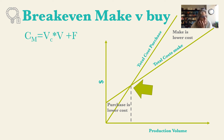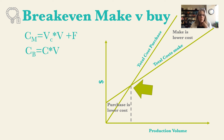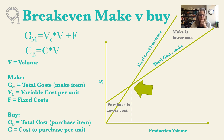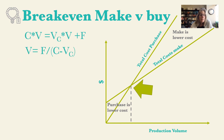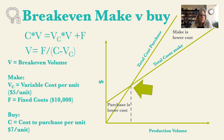The total cost of making is: variable cost times volume plus fixed cost — the same mx plus b equation. The cost of buying is: purchase price per unit times volume. We set those two equations equal to find where they cross, and the break-even volume equals fixed cost divided by purchase price minus variable cost.